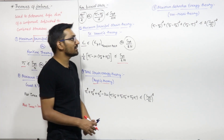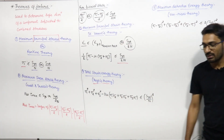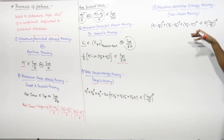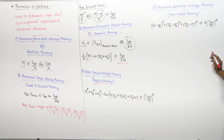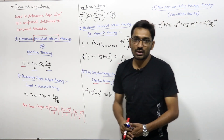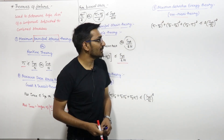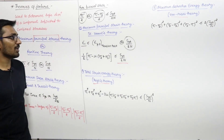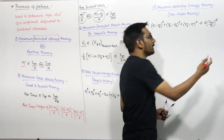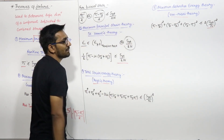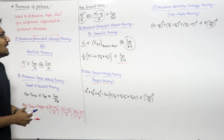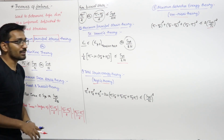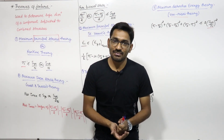The fifth and last theory is the maximum distortion energy theory, also known as von Mises's theory. This is the most important and most useful theory in machine design. The formula is: (sigma 1 − sigma 2)² + (sigma 2 − sigma 3)² + (sigma 3 − sigma 1)² should be less than or equal to 2 × (SYT/N)². If a question is asked on this theory, simply learn the formula, put in the values, and you will get the answer.